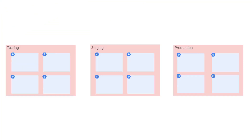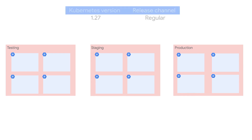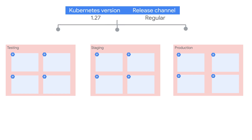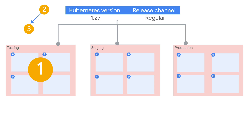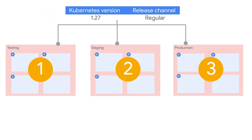Now let's suppose you have your GKE clusters in multiple environments. GKE releases a new Kubernetes version for your cluster's release channel, and you want to upgrade your clusters. But you want to ensure that groups of clusters are upgraded in a specific order — maybe the test environment first, then staging, and finally production.